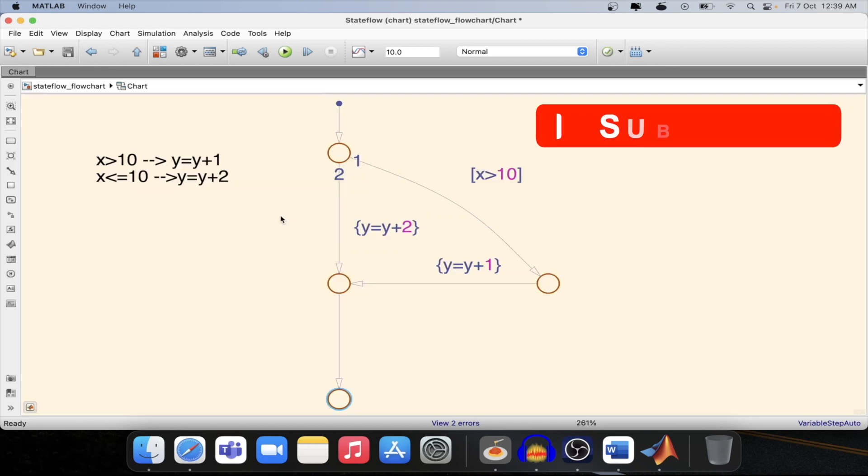We have developed a flowchart which will work based on the logic which is given over here. If x is greater than 10, then it will add 1 to the y variable. If x is smaller than or equal to 10, then it will add 2 to the y variable. We have also defined the outputs in the curly braces format and the conditions in square bracket format. This is the starting junction and this is the ending junction of the state flowchart.